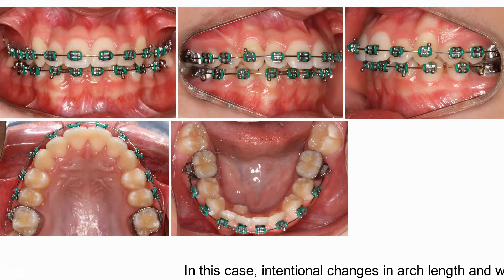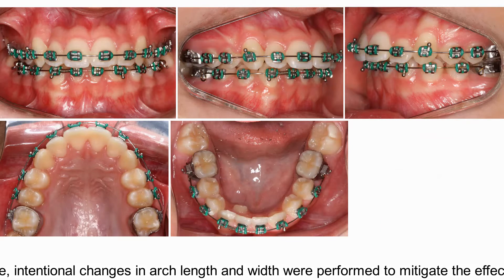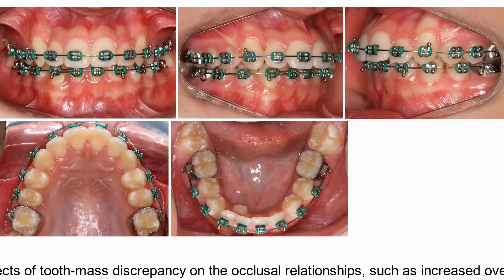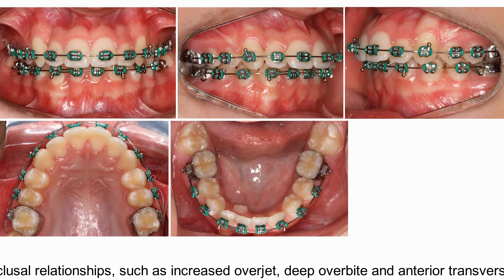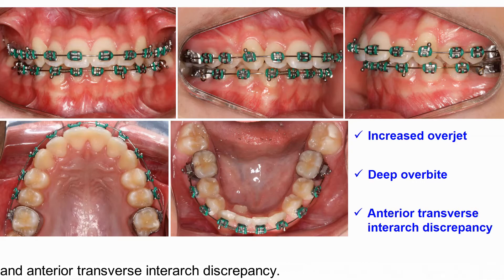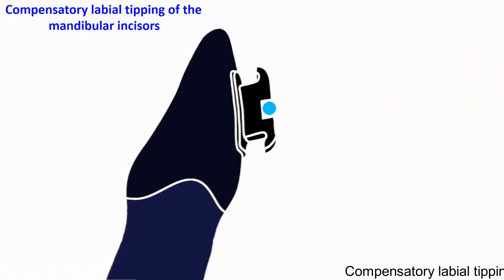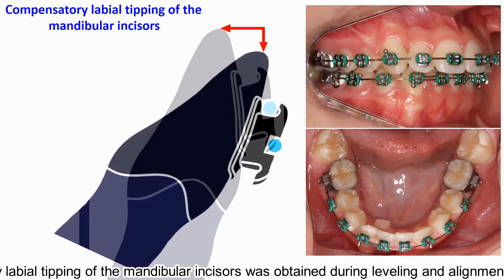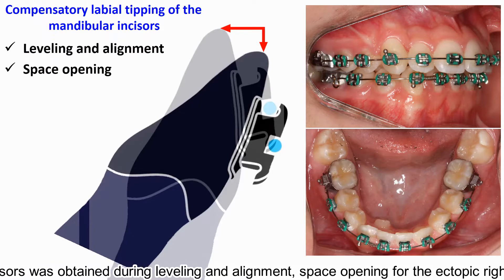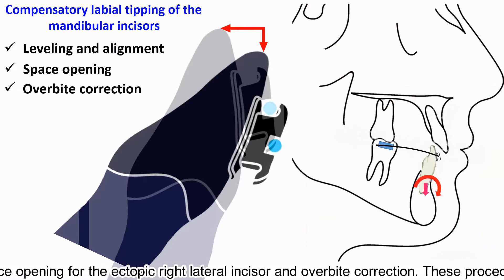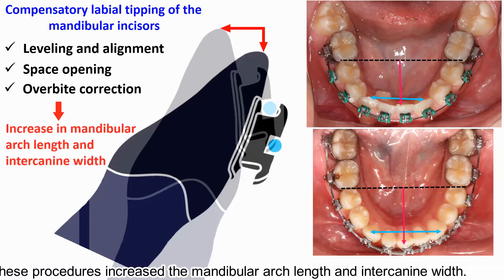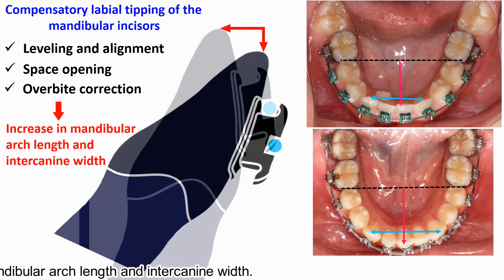In this case, intentional changes in arch length and width were performed to mitigate the effects of tooth mass discrepancies on the occlusal relationships, such as increased overjet, deep overbite, and anterior transverse interarch discrepancies. Compensatory labial tipping of the mandibular incisors was obtained during leveling and alignment, space opening for the ectopic right lateral incisor, and overbite correction. These procedures increased the mandibular arch length and intercanine width.